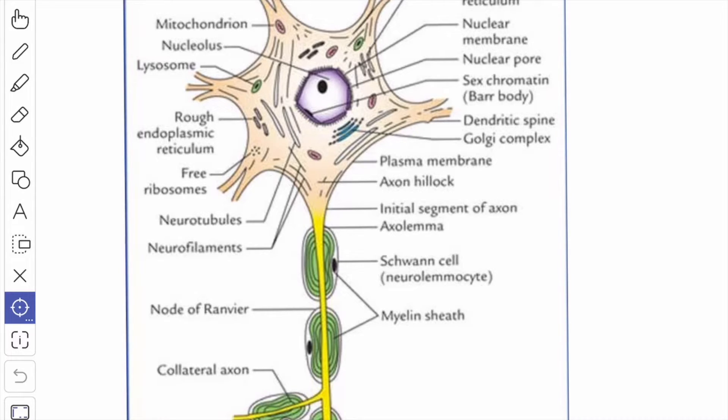The plasma membranes of the neurons contain integral membrane proteins that function as ion-sensitive channels for sodium ion, potassium ion, calcium ion, and chloride ions. The channels may be opened or closed in different states of neural activity.